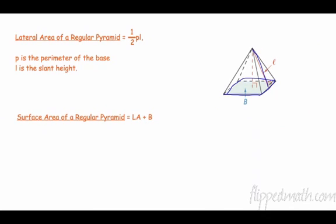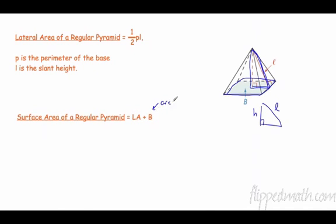The slant height isn't always given, but you can always figure it out. Notice there's a right triangle formed by the height, the slant height, and half the base length. The surface area is the lateral area plus B, where B is the area of the base. This time it's just B because there's only one base, unlike last time when we had 2B.